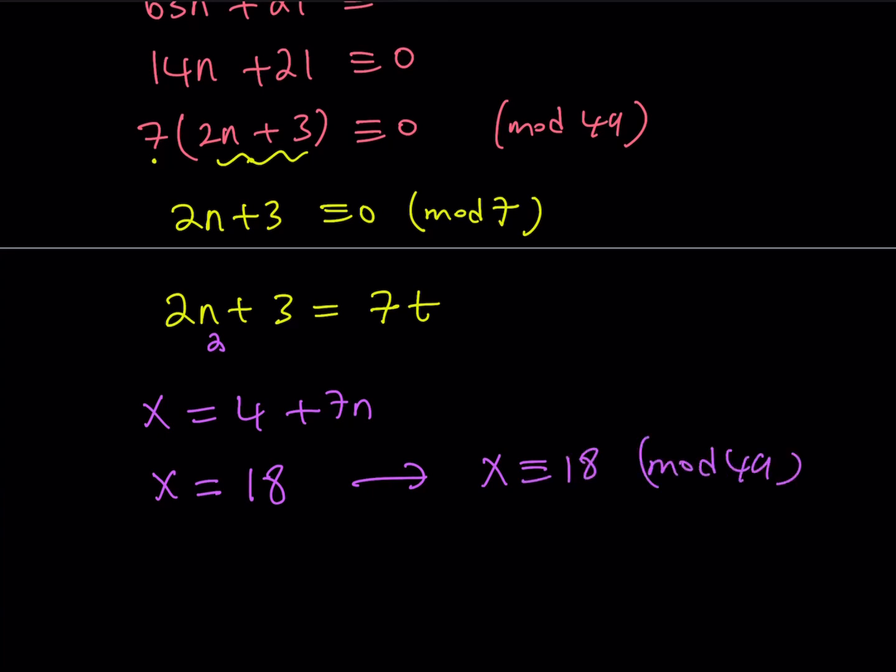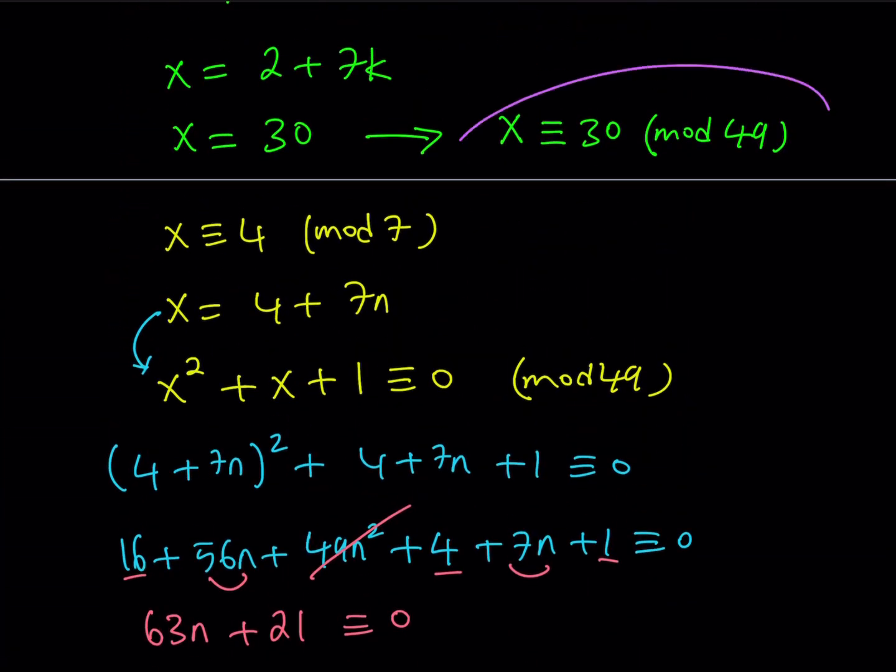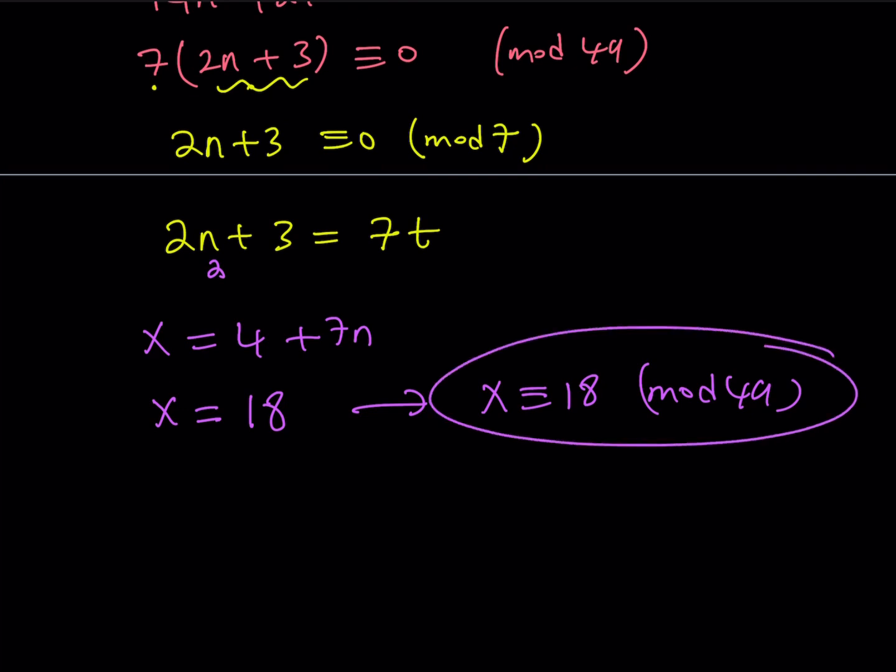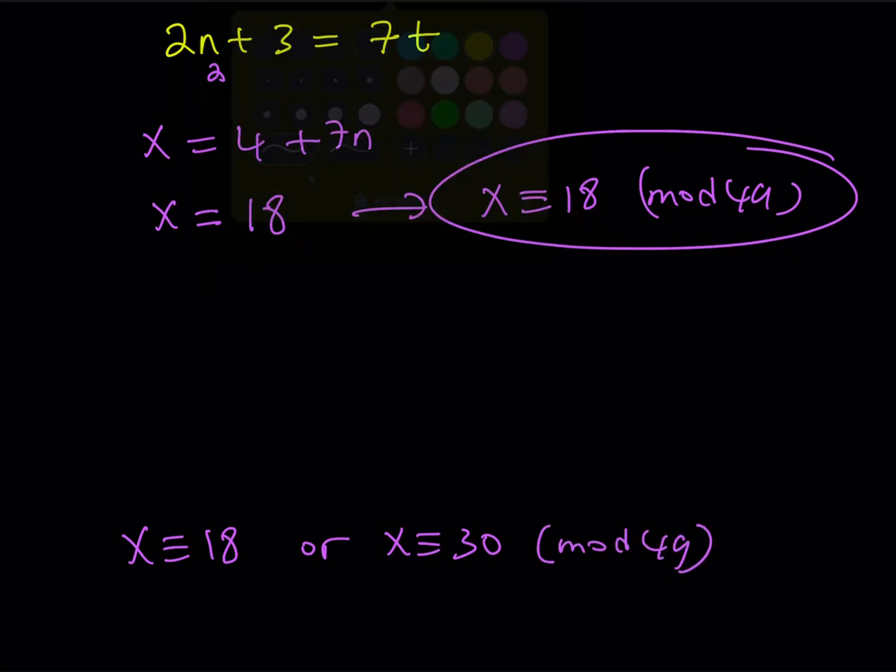So to keep a long story short, we have two solutions. One of them is this one. And the other one is this one. Let's go ahead and put it together. And that way, we're going to be getting our solution set. So x is either 18 or x is 30 mod 49. And this brings us to the end of this video.